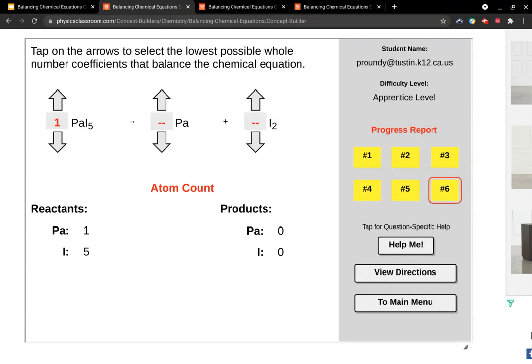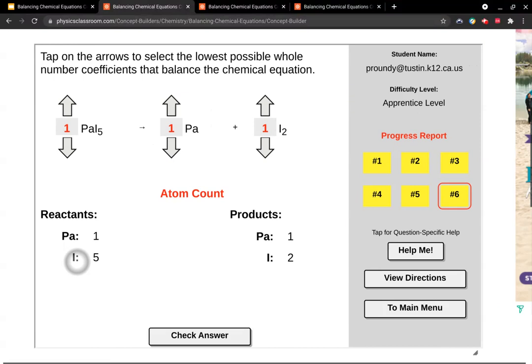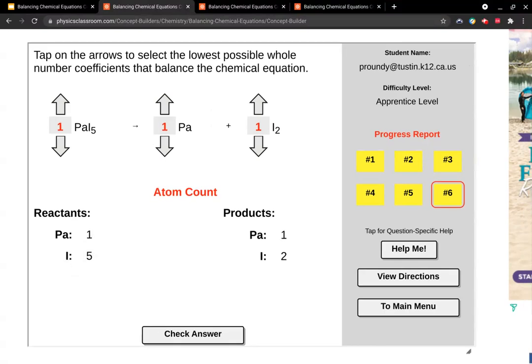I'm going to click up here. That gives us one of each kind of atom. And you'll notice down here at the bottom, we can see that we're counting the number of reactants.